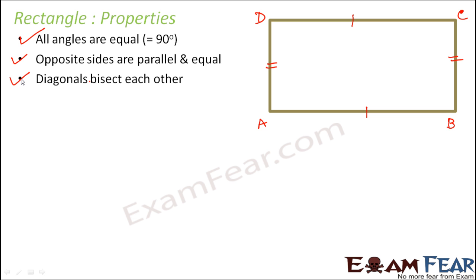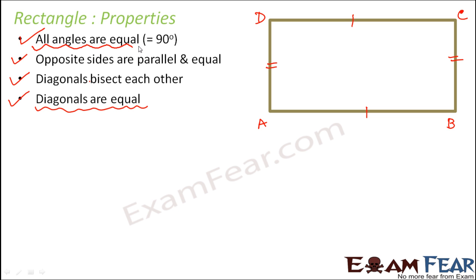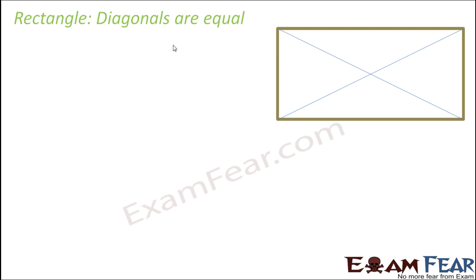Because of these properties, a rectangle is also a parallelogram. Another special property of rectangle is that the diagonals are equal — this is a property special to the rectangle, not present in a general parallelogram. So we will try to prove only these two special properties: all angles equal, and diagonals are equal. Let us start by proving that the diagonals are equal in a rectangle.